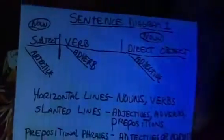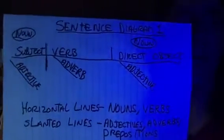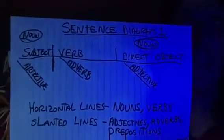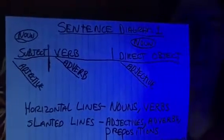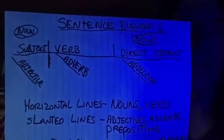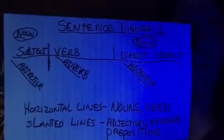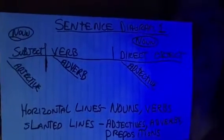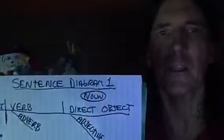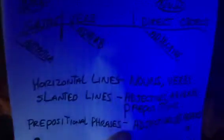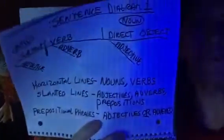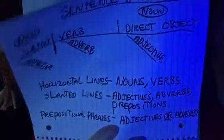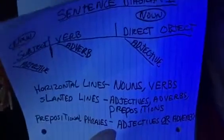So: horizontal line for nouns and verbs, slanted lines for adjectives, adverbs, and also prepositions. Prepositional phrases are for the most part functioning as adjectives or adverbs. Alright, let's move on.